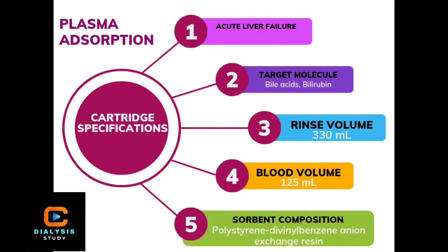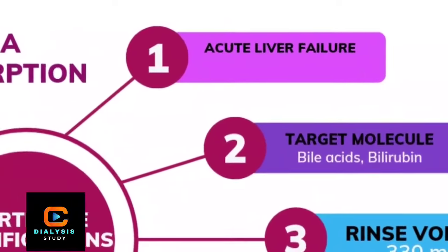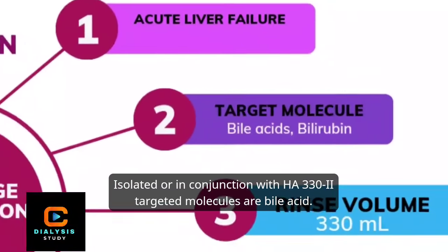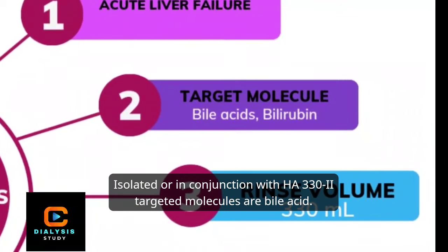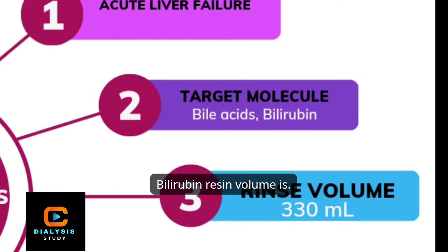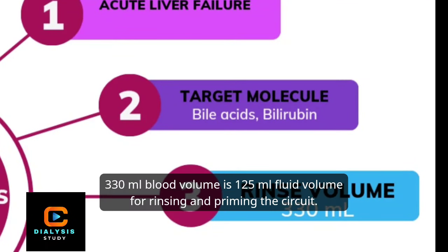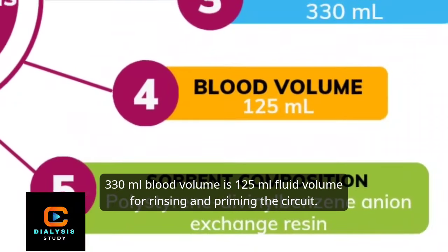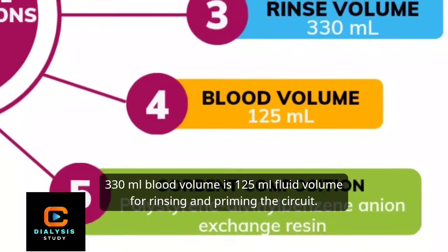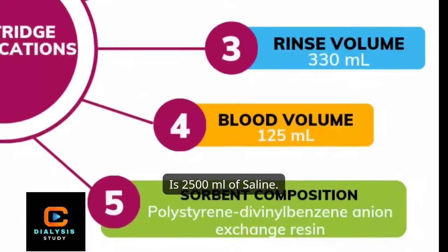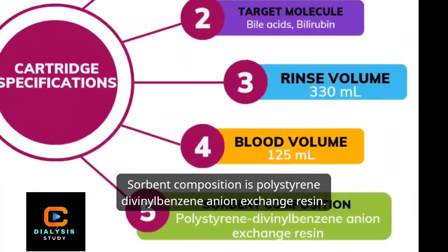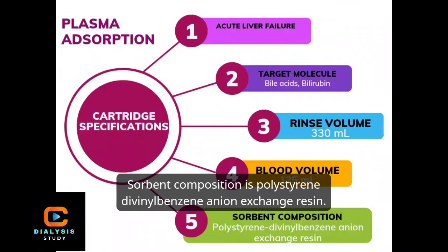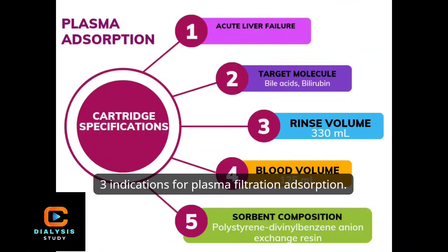Cartridge specifications and indications: indicated for acute liver failure, isolated or in conjunction with HA-332. Targeted molecules are bile acids and bilirubin. Resin volume is 330 mL, blood volume is 125 mL, and fluid volume for rinsing and priming the circuit is 2,500 mL of saline. Sorbent composition is polystyrene divinyl benzene anion exchange resin.